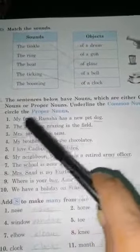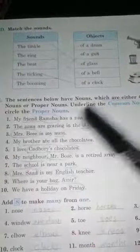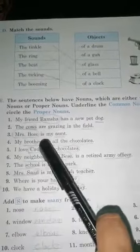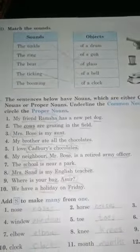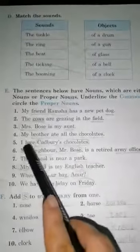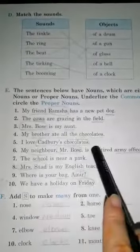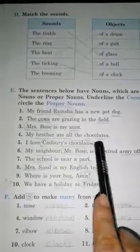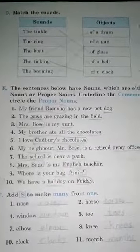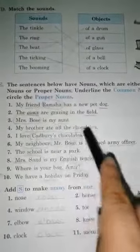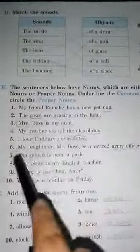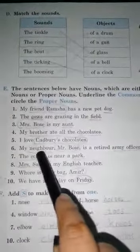Our aunt is common, so we underline it. Brother is also common, so we underline it. Chocolates are also common, so we underline them. If it is a proper noun, we will circle it instead of underline it.